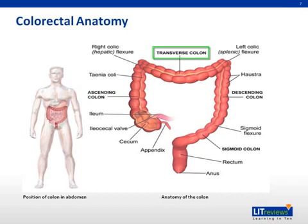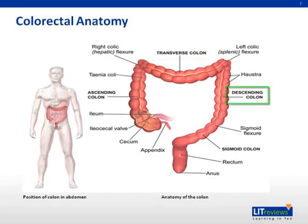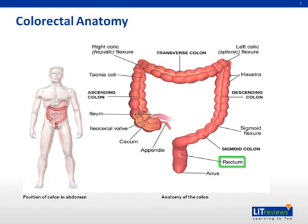The transverse colon is about 45 centimeters in length, hanging between fixed positions at the hepatic and splenic flexures. The descending colon extends downward from the splenic flexure for about 25 centimeters. It is smaller in diameter than the ascending colon. At the level of the pelvic brim, there is a transition between the relatively thin-walled fixed descending colon and the thicker mobile sigmoid colon. The rectum is 12 to 15 centimeters in length, occupies the curve of the sacrum in the true pelvis, and the posterior surface is almost completely extraperitoneal.